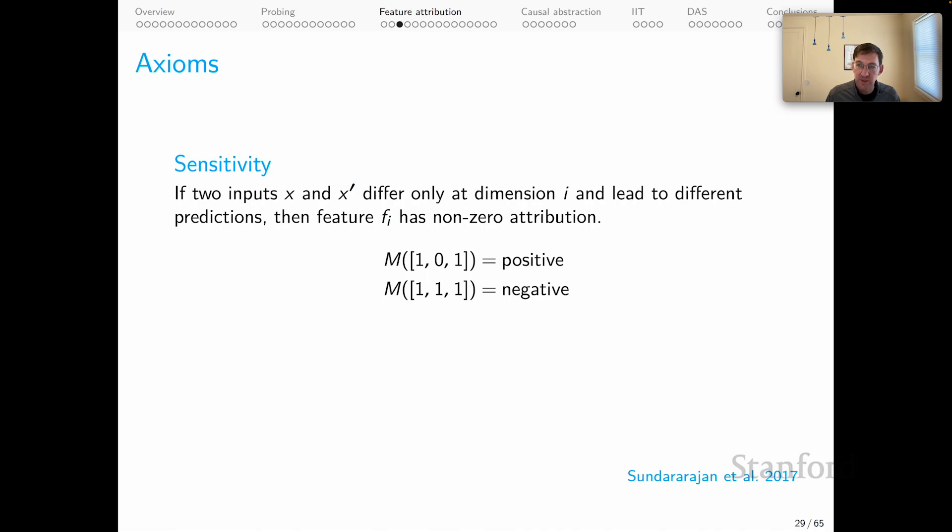So here's a quick example. Our model is M, and it takes inputs that are three-dimensional, and for input 1, 0, 1, this model outputs positive, and for 1, 1, 1, it outputs negative. That's a difference in the predictions, and that means that the feature in position 2 here must have non-zero attribution. Seems very intuitive because obviously this feature is important to the behavior of this model.